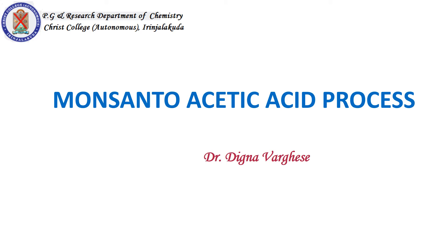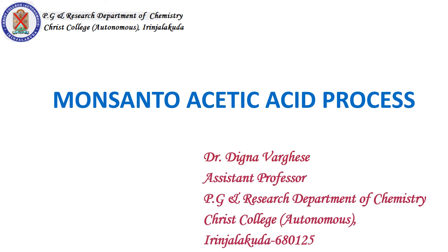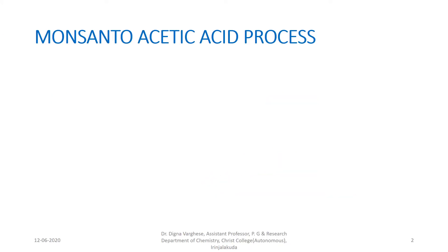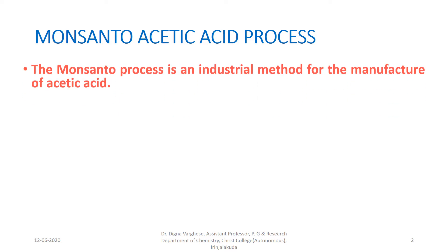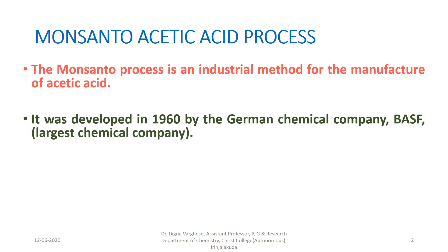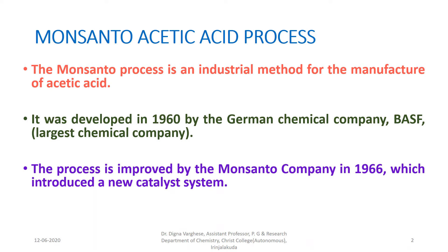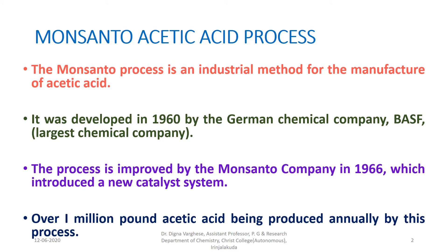Monsanto Acetic Acid Process. I am Dr. Degna Varghese. The Monsanto Acetic Acid Process is an industrial method for the manufacture of acetic acid. It was developed in 1960 by the German chemical company BASF. The process was improved by the Monsanto company in 1966, which introduced a new catalyst system. Over 1 million pounds of acetic acid are produced annually by this process.